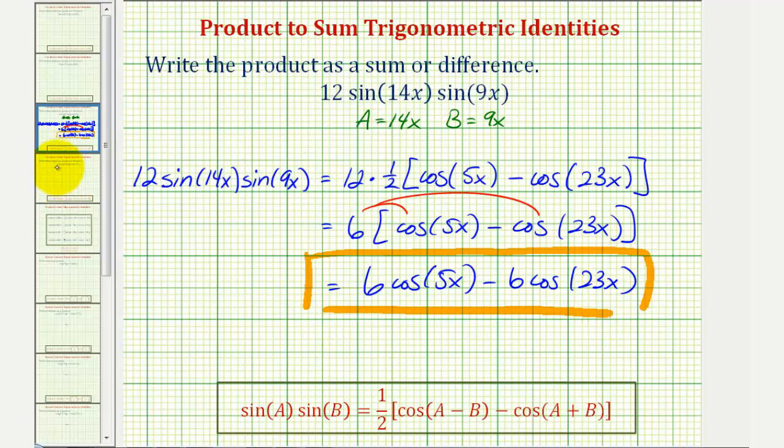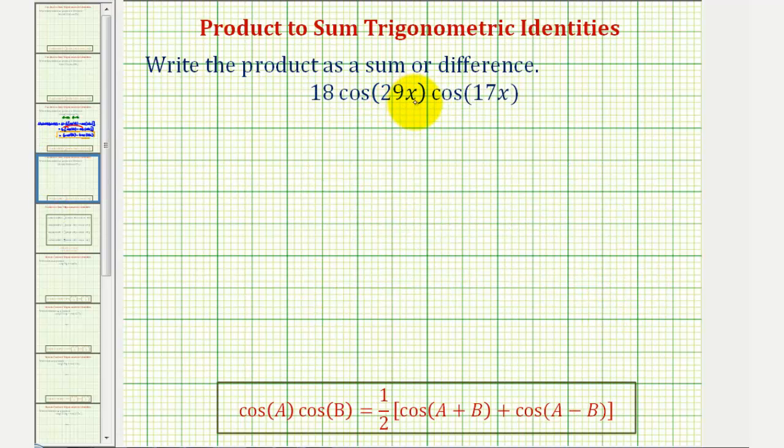Let's take a look at our second example. Again, notice how if x is positive, 29x would be greater than 17x. So this is in the preferred order where A is equal to 29x and B is equal to 17x.